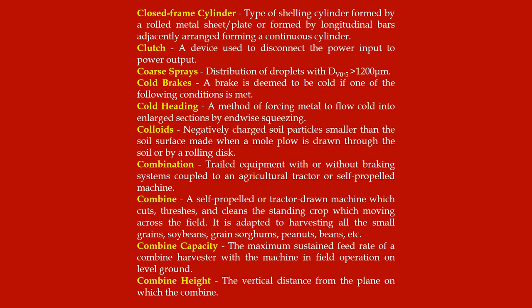Coarse sprays: distribution of droplets with DV 0.5 greater than 1200 micrometers. Cold breaks: a break is deemed to be cold if one of the following conditions is met. Cold heading: a method of forcing metal to flow cold into enlarged sections by endwise squeezing. Colloids: negatively charged soil particles smaller than the soil surface made when a mole plow is drawn through the soil or by a rolling disc.